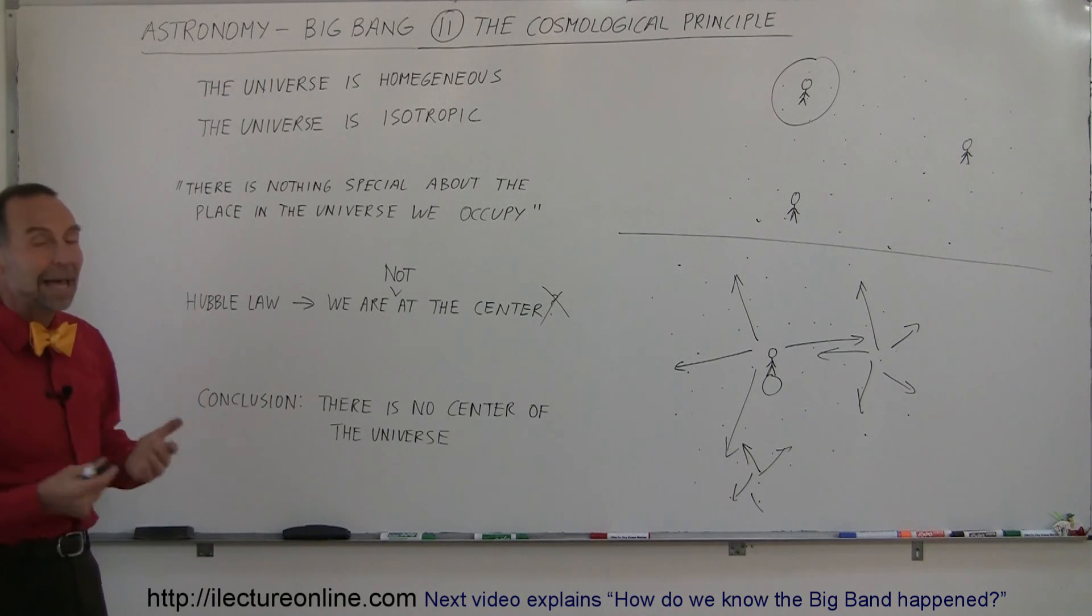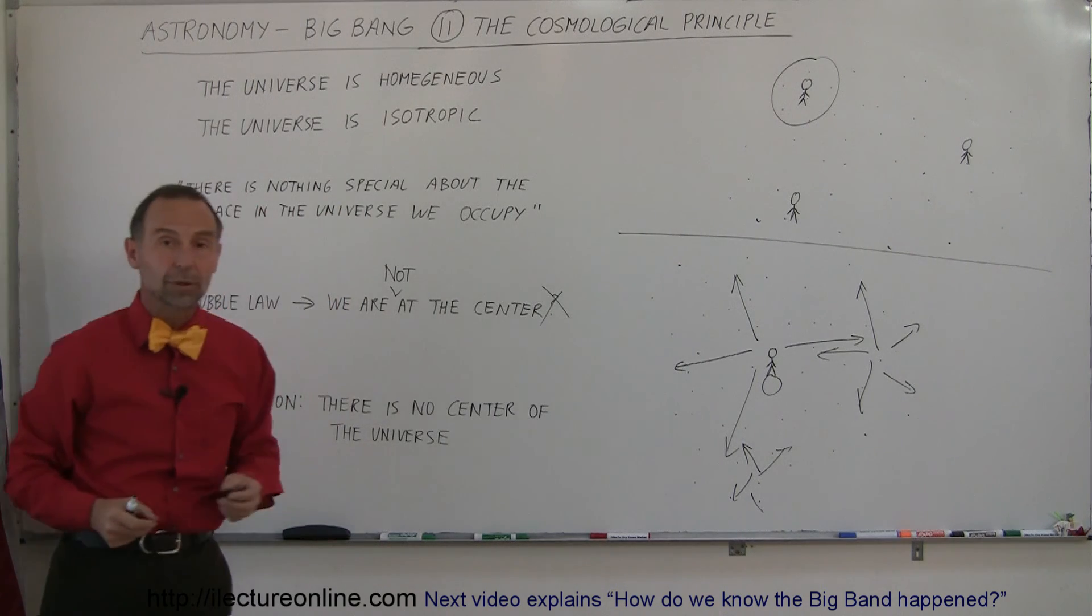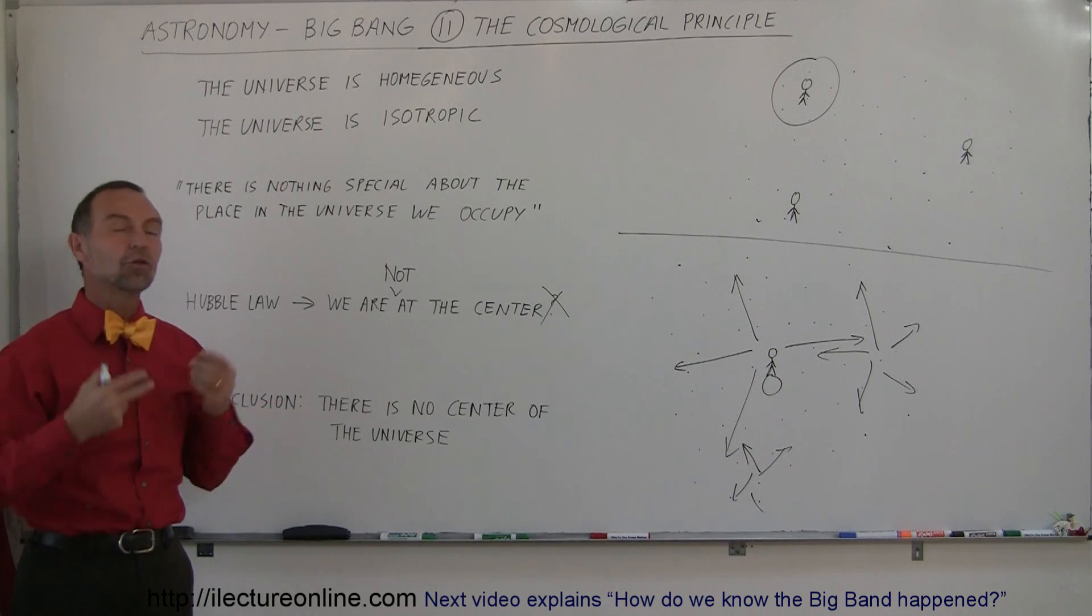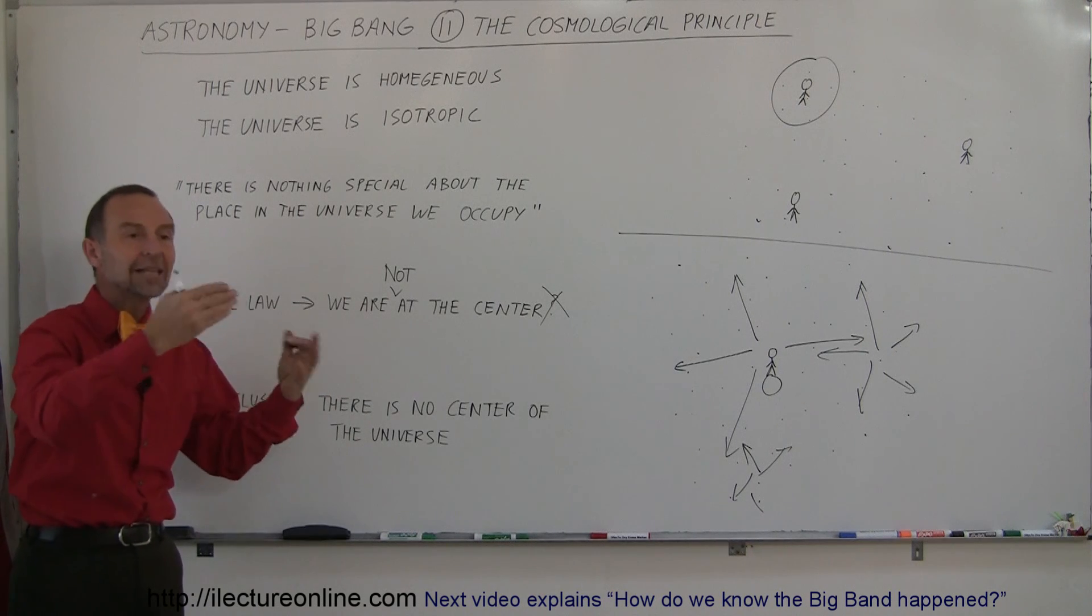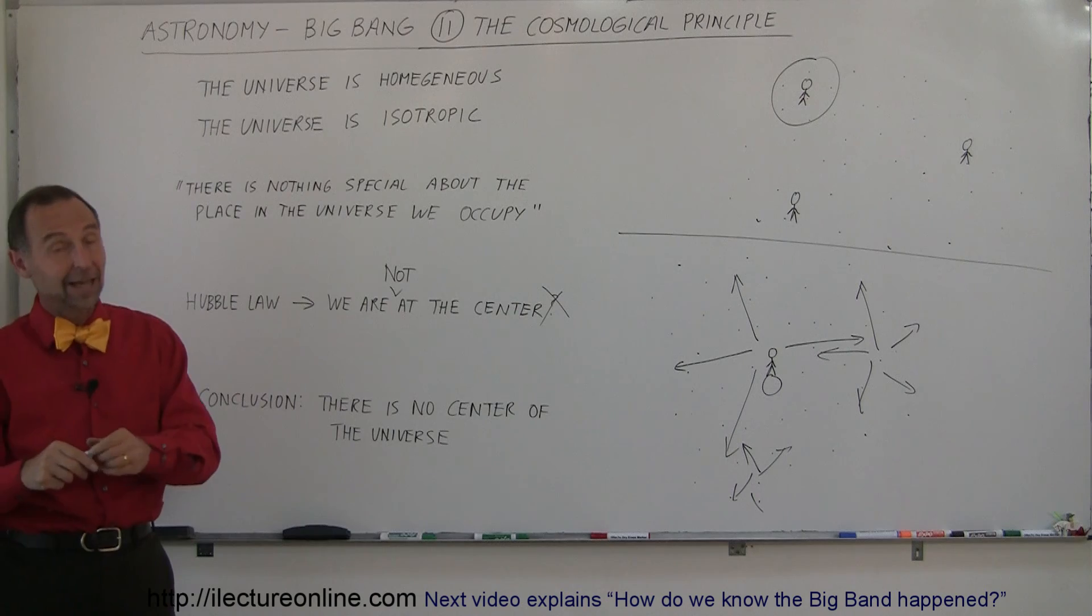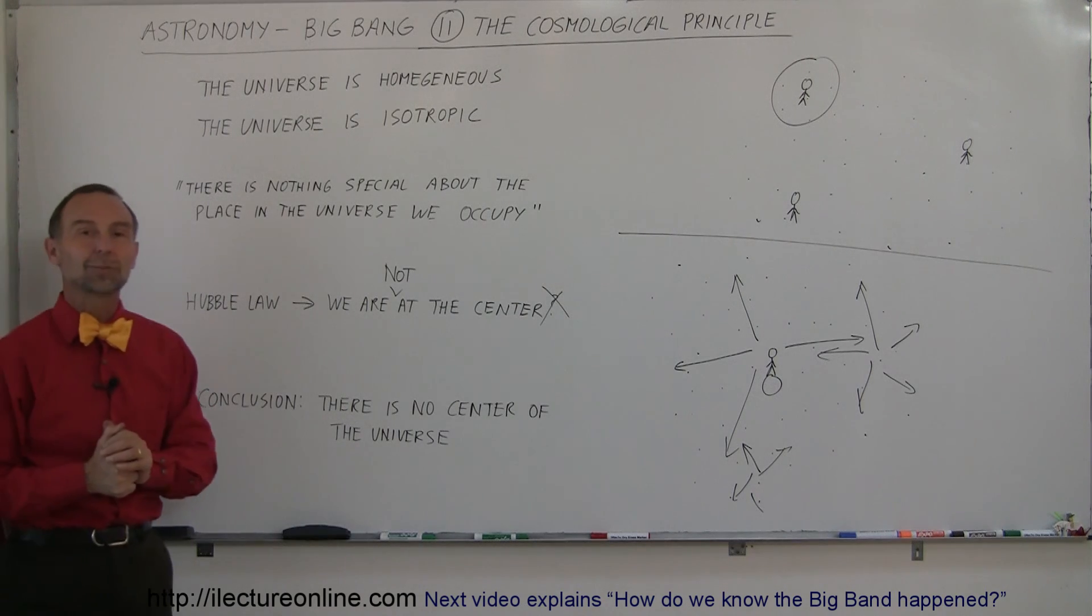Everything looks the same, and that is considered to be the cosmological principle. There's no special place, there's no center, there's no one place that's any different from any other place in the universe. And that is very amazing. That's called the cosmological principle.